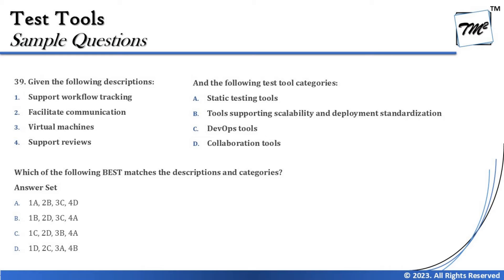To get started, question number 39 says: given the following descriptions — support workflow tracking, facilitate communication, virtual machine, support reviews, etc. — and the following test tool categories — static testing tool, tool for scalability and standardization, DevOps and collaboration tool — which of the following best matches the description and the categories?